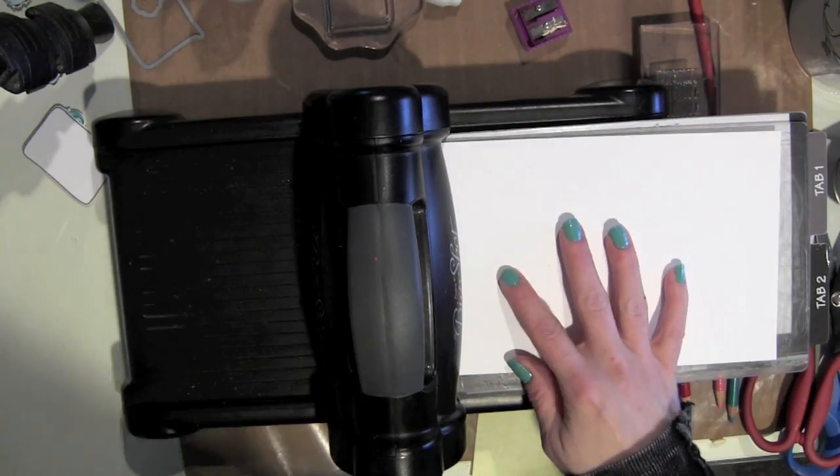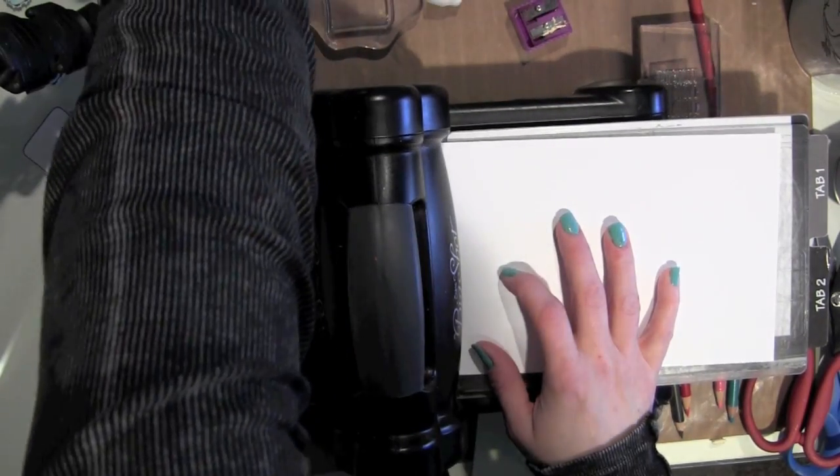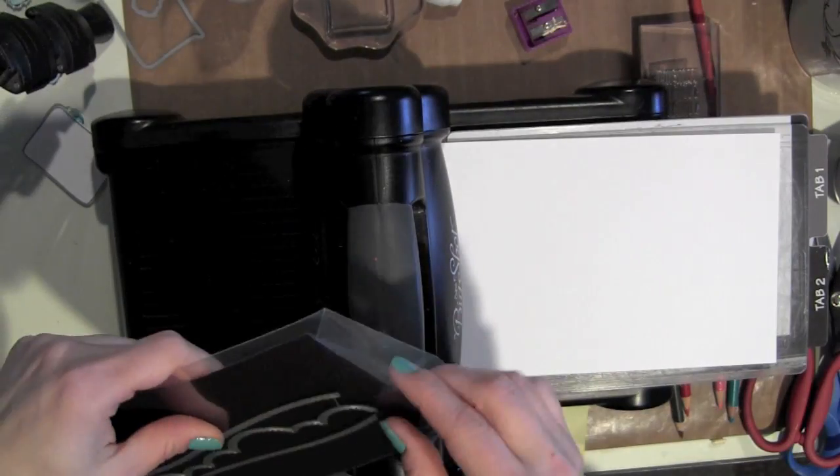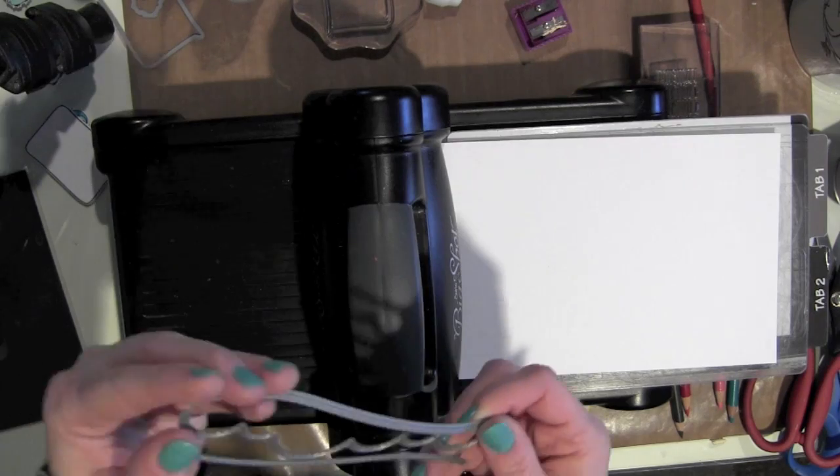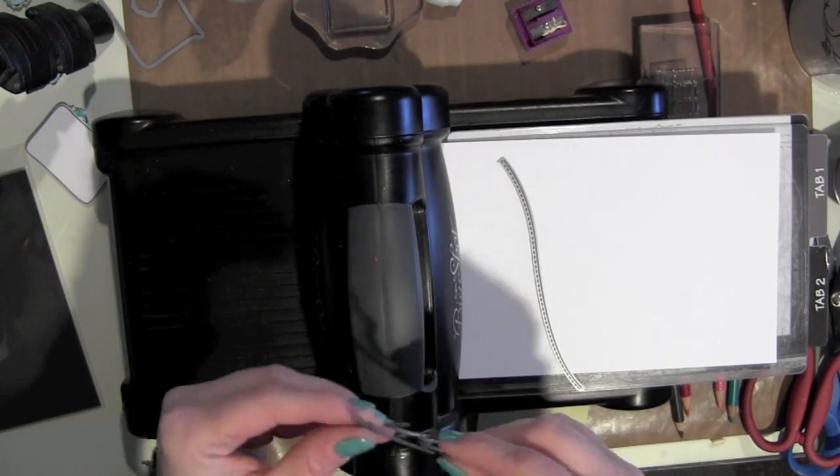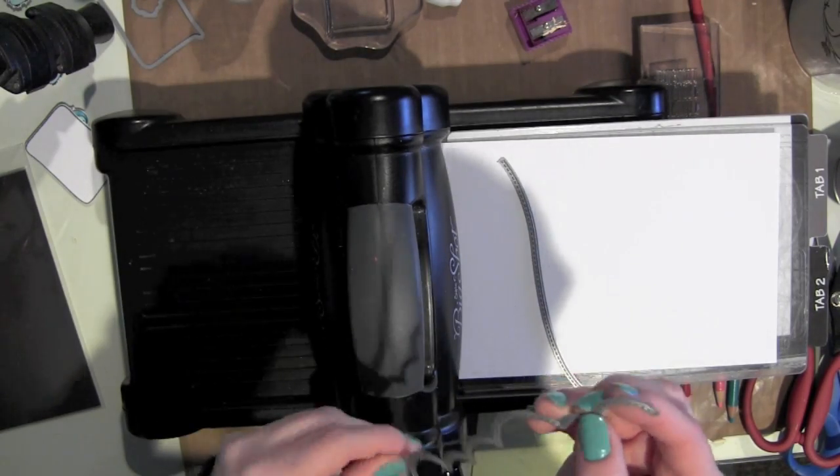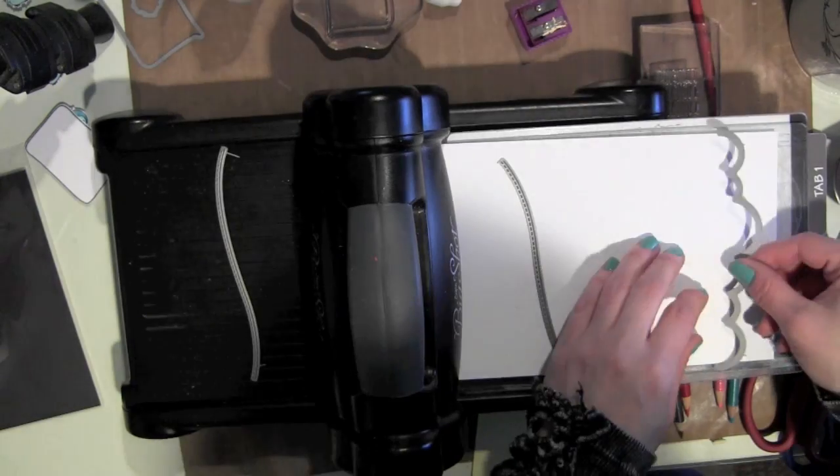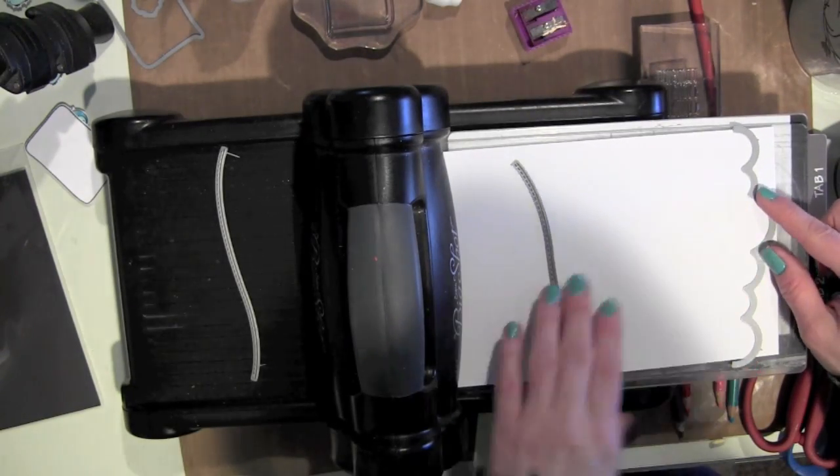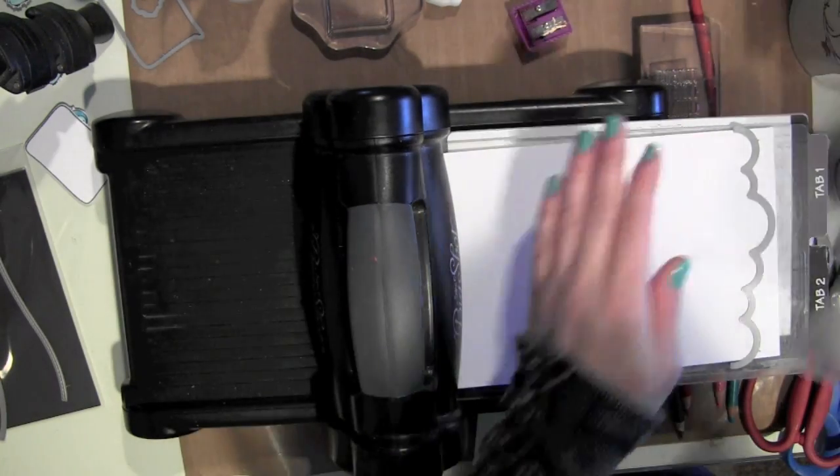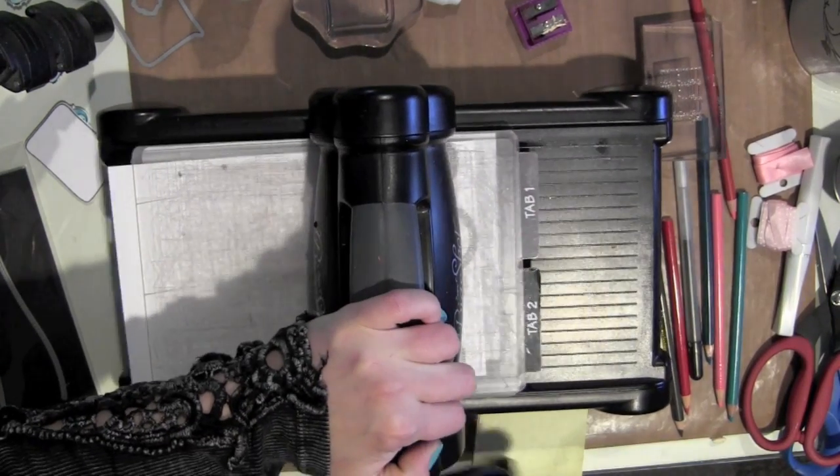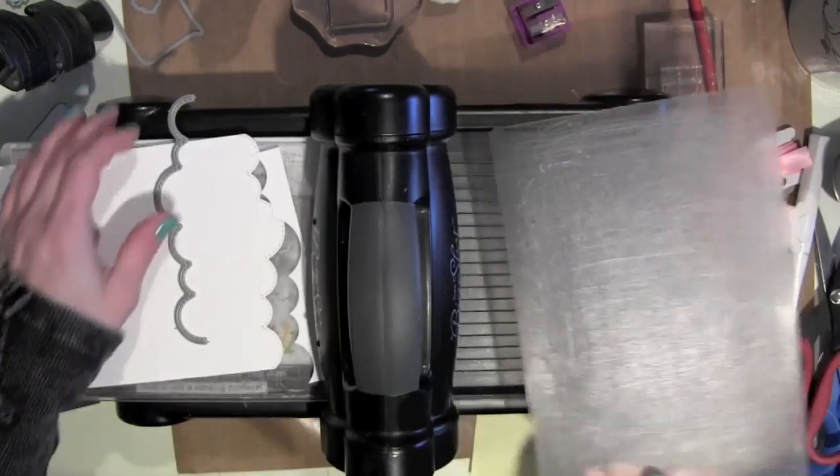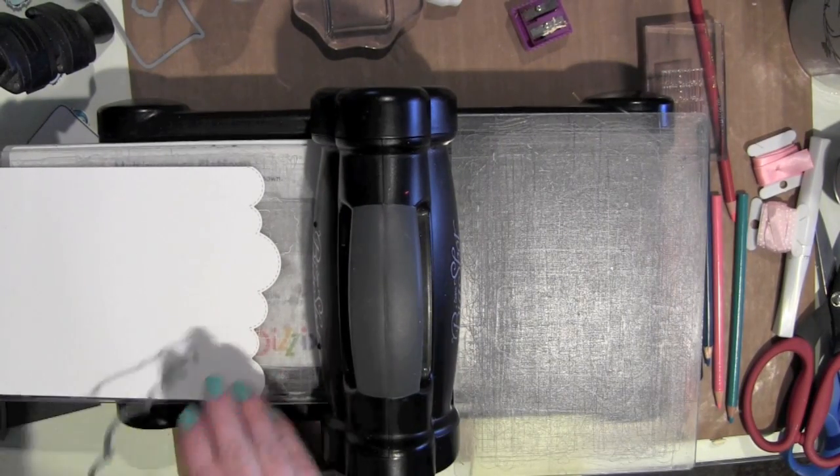Next I'm going to take my landscape trio of dies. You can see there's this wonderful cloud die and then two kind of wavy borders, which would be perfect for landscapes and things like that. But I'm actually going to use mine all for clouds. I liked the combination of both the more scalloped, cloud-like border with that wavy border.